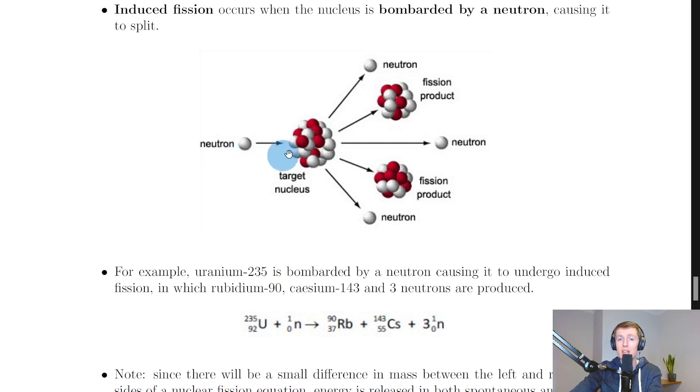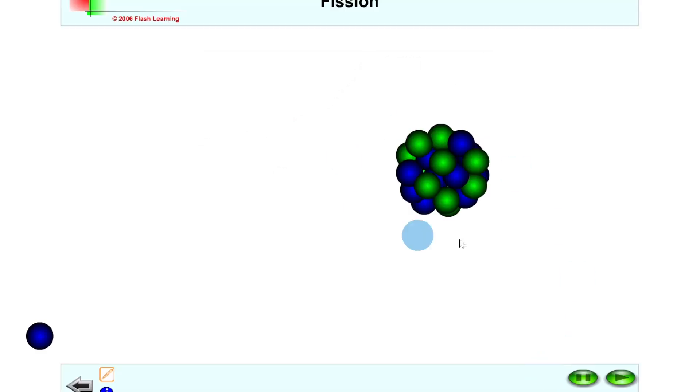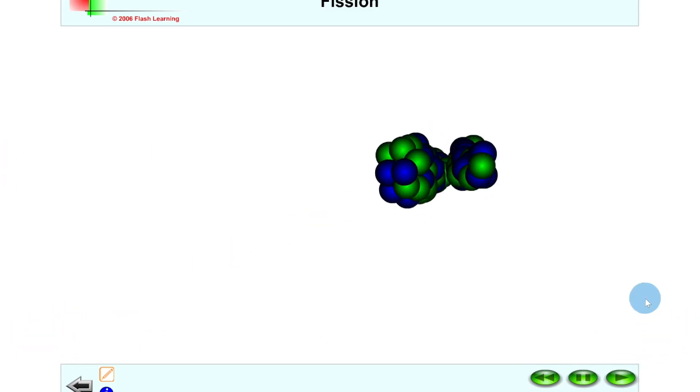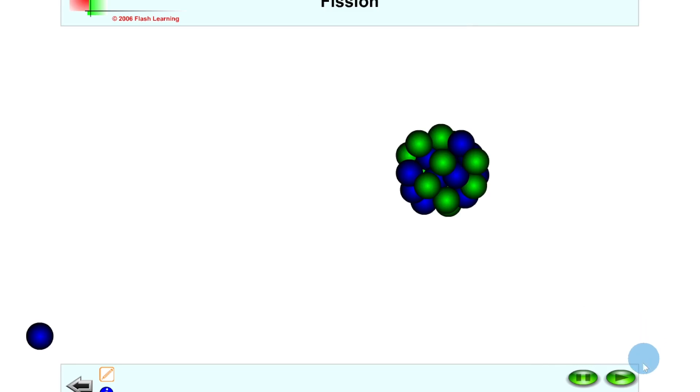And I'll just show you a quick simulation to help you visualize this induced nuclear fission. So you'll see we've got our target nucleus here plus our neutron on the left-hand side. And if we click play, you'll see the neutron hits into the nucleus causing it to split into two lighter fission fragments and three neutrons were produced. And I'll just show you that again.